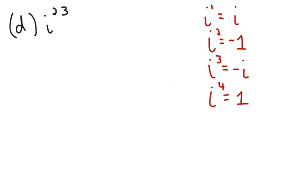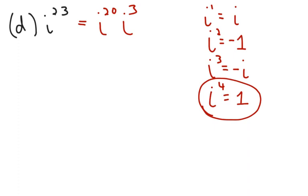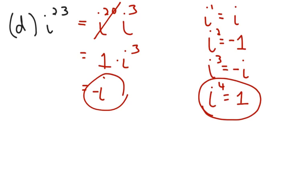If you try to put i to the twenty-third in your calculator, it gives you a weird-looking answer. But every power of i is either i, negative 1, negative i, or 1. Any exponent divisible by 4 is always going to be 1. So to evaluate i to the twenty-third, find the closest multiple of 4 below 23, which is 20. i to the twentieth is 1, and there are three remaining i's, so it's 1 times i to the third, which is negative i.